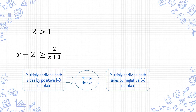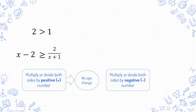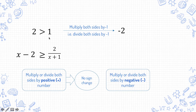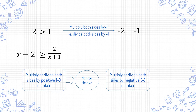On the other hand, what happens when you multiply or divide both sides by a negative number? Say you multiply this inequality on both sides by negative 1, which is equivalent to dividing both sides by negative 1. 2 times negative 1 is negative 2, and 1 times negative 1 is negative 1. And you know that negative 2 is smaller than negative 1. So as you can see, when both sides are multiplied or divided by a negative number, the sign is reversed.